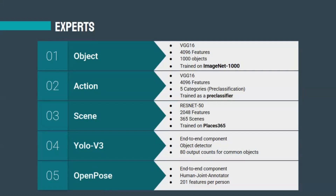The scene expert uses a ResNet50 architecture, classifying 365 scenes from the Places365 dataset, producing 2048 early features. Then we have the YOLO V3 expert, a state-of-the-art real-time object detection system that classifies up to 80 object types, used as an end-to-end component to output the frequency of those 80 objects. We also have the OpenPose expert, an end-to-end real-time multi-person human joint annotator that detects the human body, hands, face, and foot key points — totaling 201 features extracted from every image.